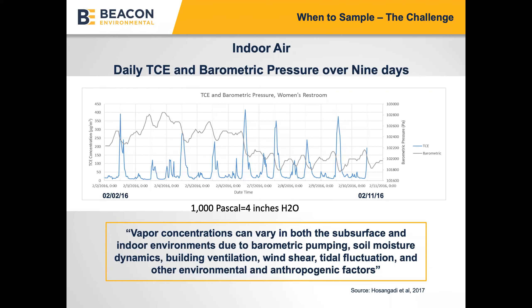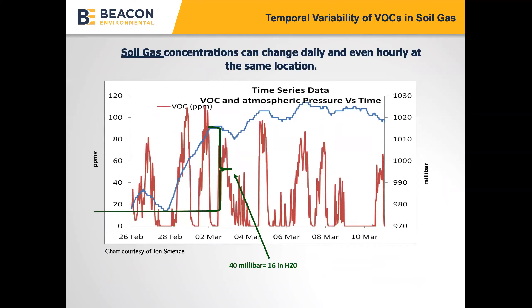Overall, vapor concentrations can vary in both the subsurface and indoor air environments due to a number of different variables including barometric pumping, soil moisture dynamics, building ventilation, wind shear, and other factors. The barometric pressure change highlighted here is four inches of water, approximately 1,000 pascals — keep that figure in mind. We're also looking at temporal variability of soil gas on a daily and even hourly basis, measured from a gas clam device in the field, with barometric pressure changes of about 16 inches of water.